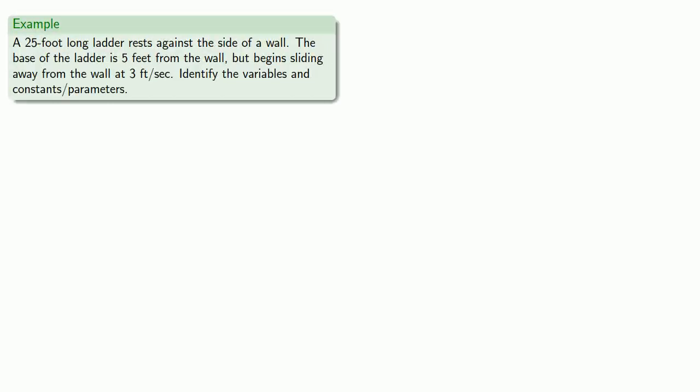So say we have a 25-foot ladder resting against one side of a wall. The base of the ladder is 5 feet away from the side of the wall, but begins sliding away from the wall at 3 feet per second. To begin with, let's identify the variables and the constants and parameters.